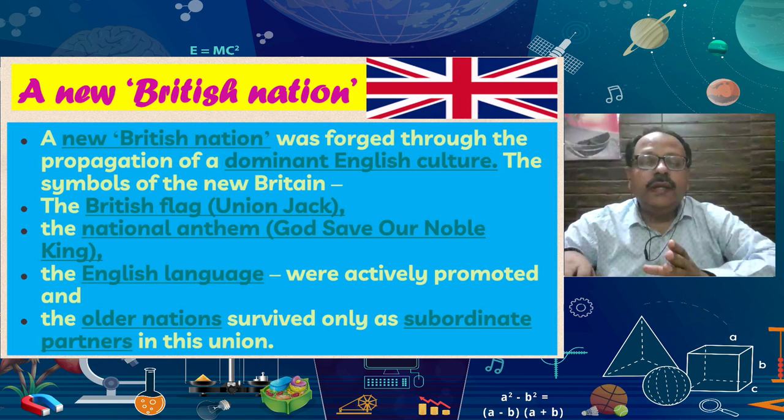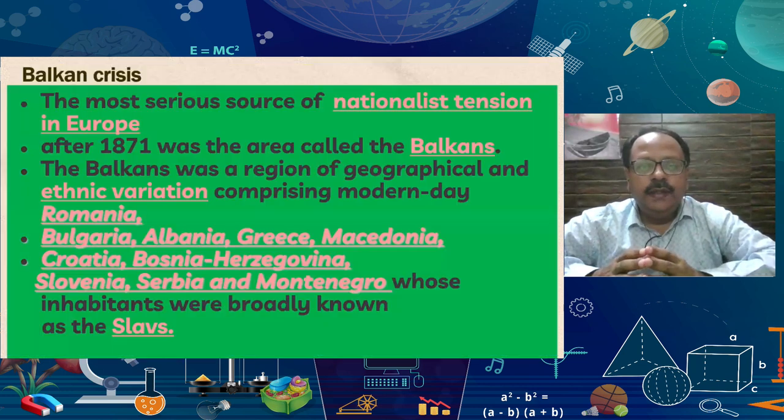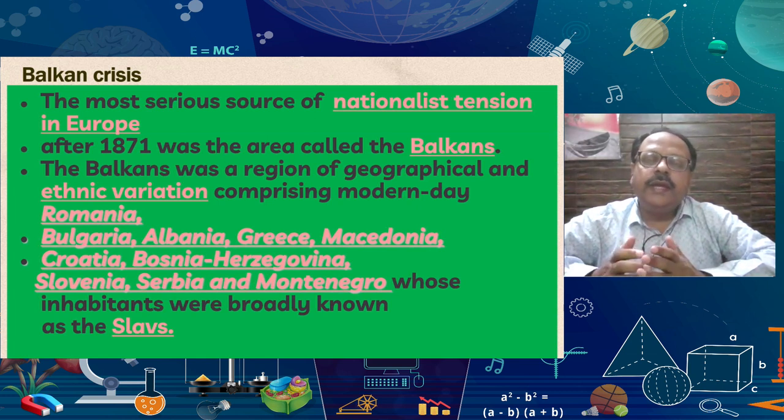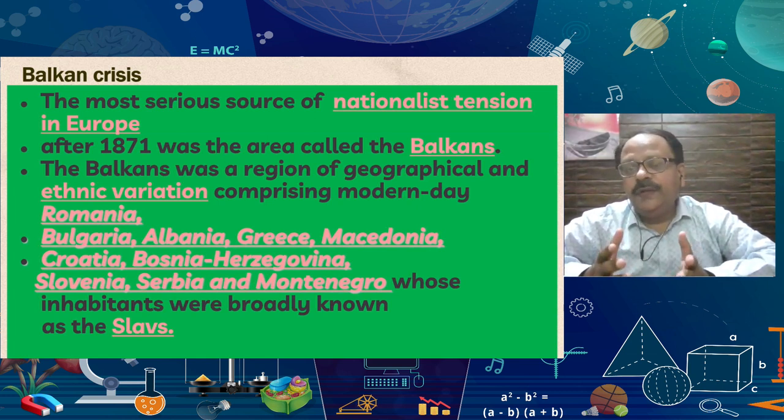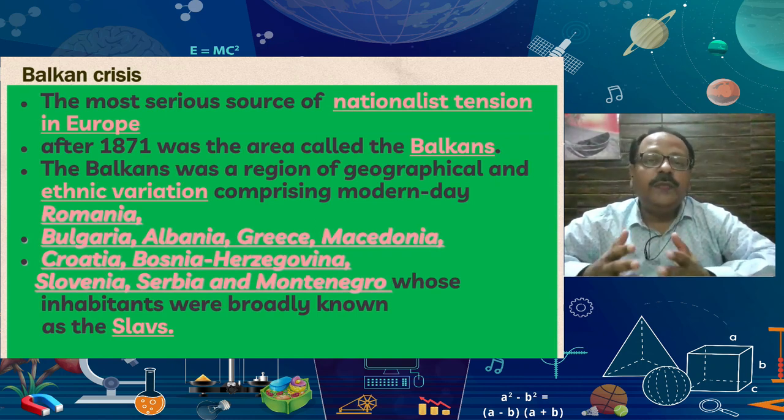Now students, we are going to learn about one of the very important topics of this chapter — the Balkan Crisis. In this very long chapter, you can see that in Europe there was a national feeling of nationalism, and what is extreme nationalism? Extreme nationalism means believing that our country's culture is the most important, and other countries should come under our domination. All these things were converted into extreme nationalism.